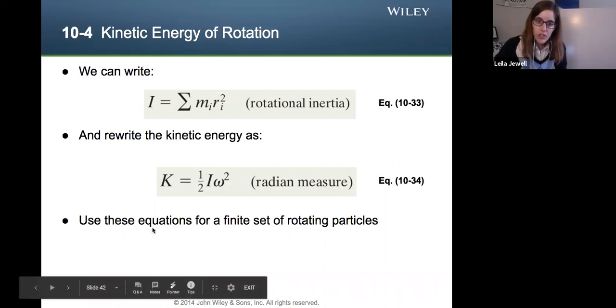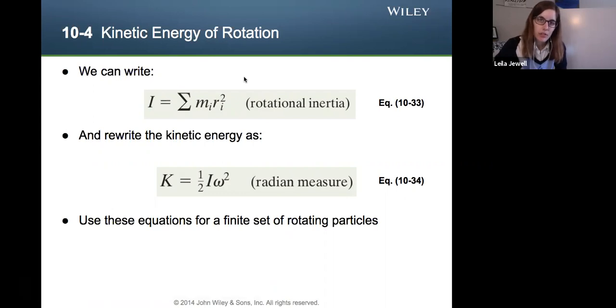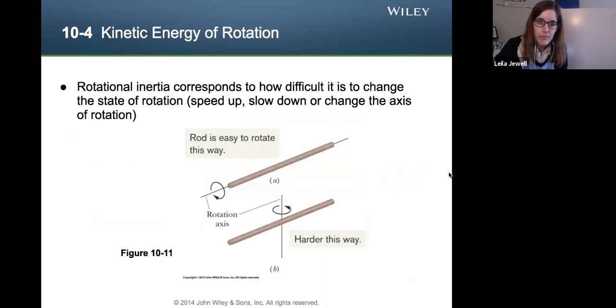So we'll use these equations, specifically this one for I, anytime you have a finite set of rotating particles. So it's not an object like we aren't here focusing on a tennis racket that's spinning. We're just focused on, hey, we have this mass that's at some distance. It's rotating from the axis of rotation. Now, what is this rotational inertia? We have the quantitative number. What does that mean conceptually? What it's trying to convey is how difficult is it to change the state of rotation, to speed it up, to slow it down, or change the axis of rotation.